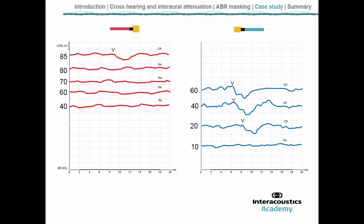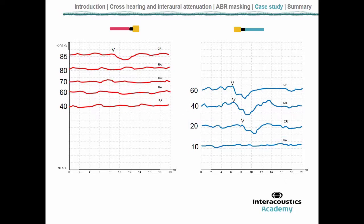Here's what we found. On the left — the starting ear — we found a threshold of 20 dB nHL for the 4 kHz chirp. The true behavioral threshold is likely well within the normal range. The ABR threshold is 20 dB nHL on the left. Now switching to the right — the suspect ear — it might be typical to start at a moderate level, but here we see no response: a flat line.